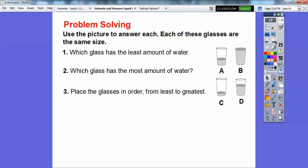So I used a picture to answer each. And each of these glasses are the same size. So which glass has the least amount of water out of all of these? Well, it looks like this one is glass C has the smallest amount. Which glass has the most amount of water? Which one's filled up to the top? This one is glass B is right here.